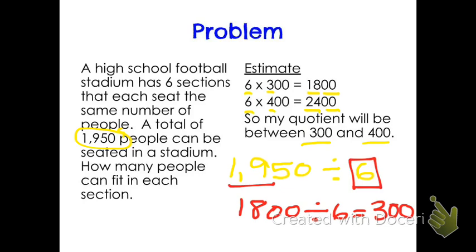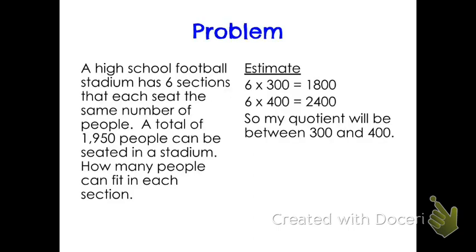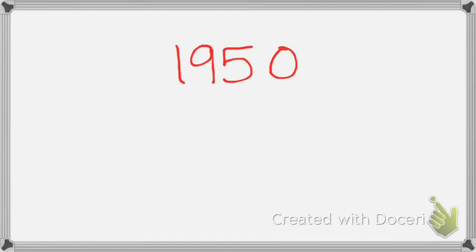Now we're ready to actually start dividing to find our actual answers. For this one we would have one thousand nine hundred and fifty divided by six. I'm going to do this on another page to give us a little more space.